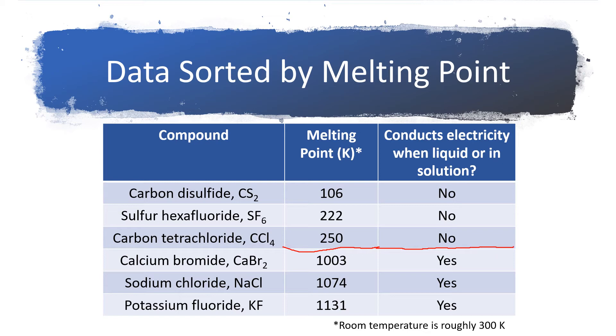Things that have melting points below room temperature do not conduct electricity when dissolved in solution and the things that melt above room temperature do. So we're seeing some clustering of properties, things that are electrolytes have high melting points, things that are non-electrolytes have melting points that are low.